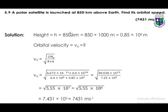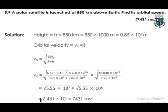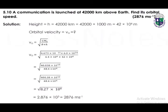Question 5.9: a polar satellite is launched at 850 kilometers altitude. Converting to meters: h = 0.85 × 10⁶ meters. We need to find the orbital velocity. Using the orbital velocity formula v = √(G·Me / (R+h)), and substituting all values, we get 40.038 × 10¹³ / 7.25 × 10⁶. After dividing, we get 5.55 × 10⁷, and taking the square root gives the orbital velocity: 7431 m/s.